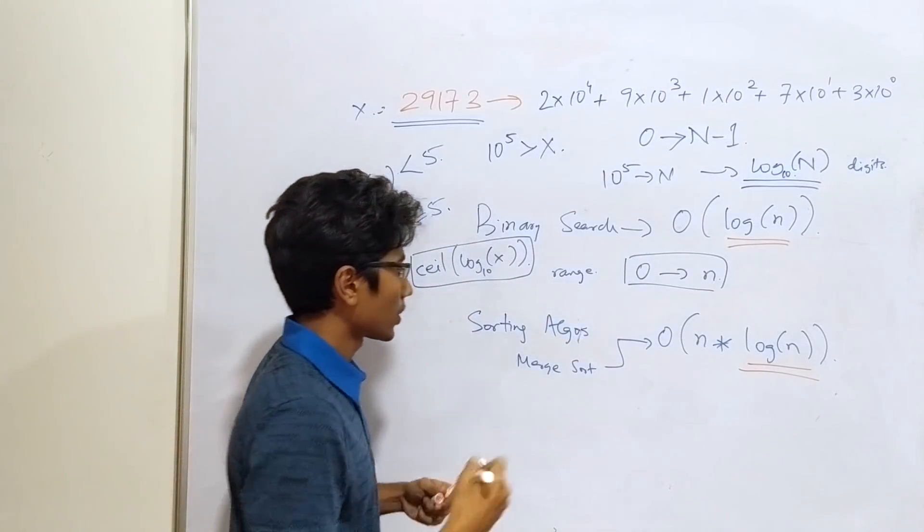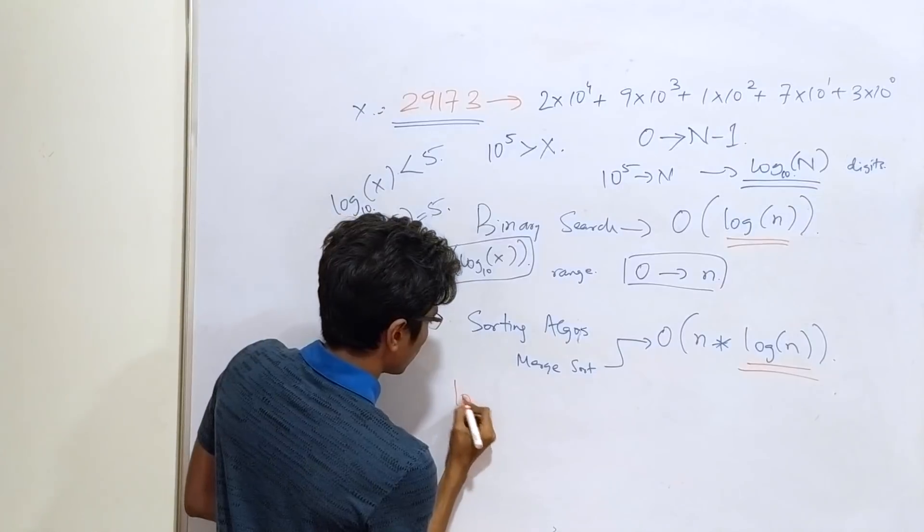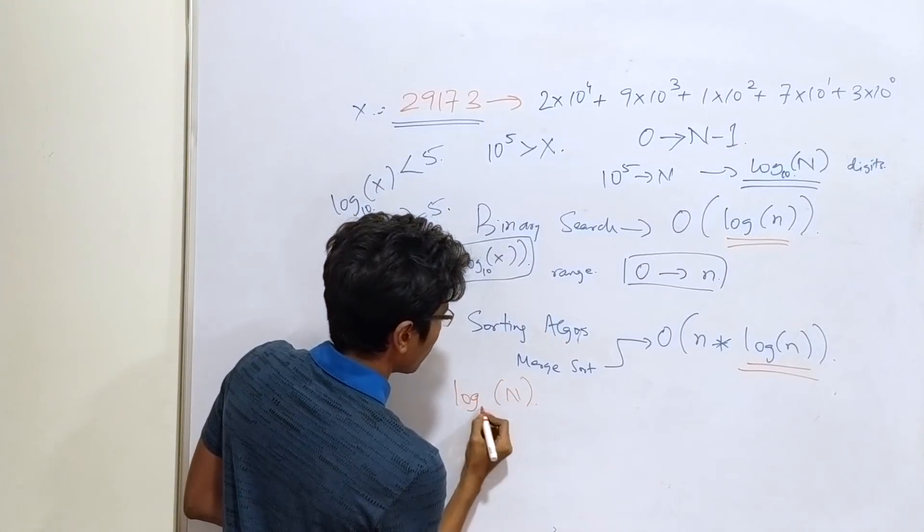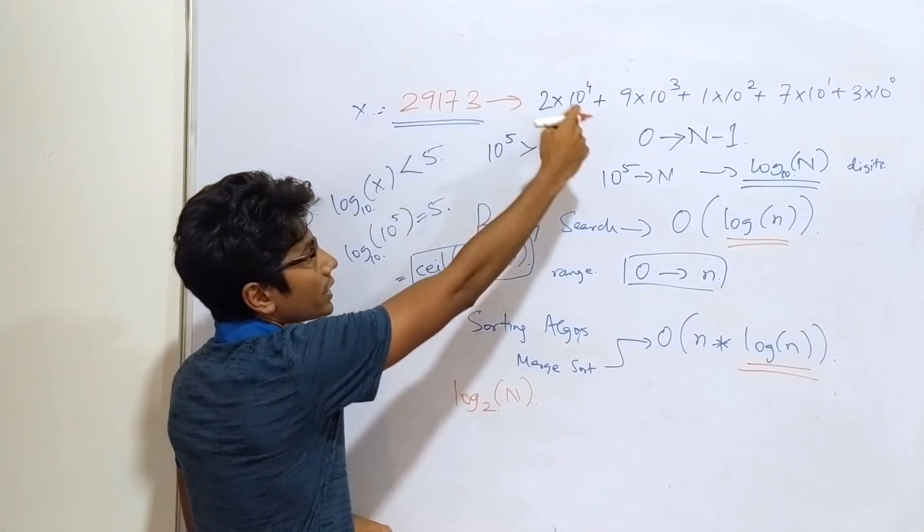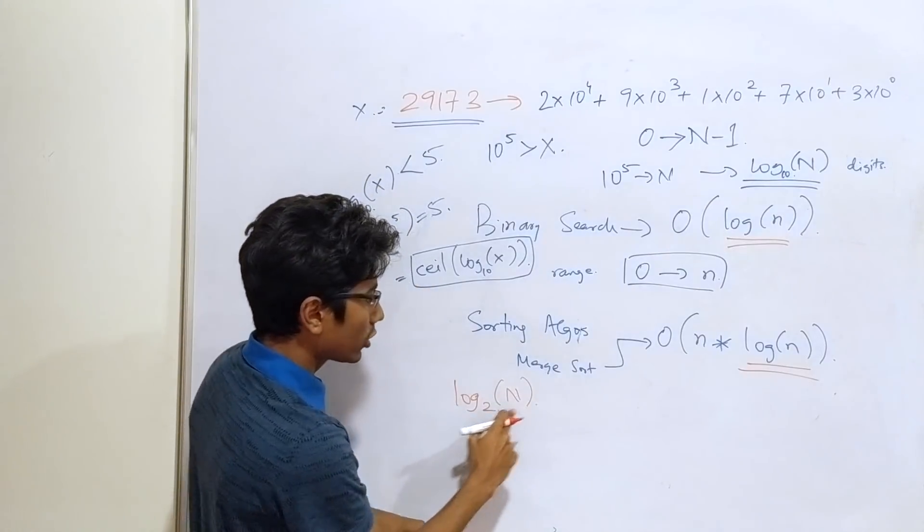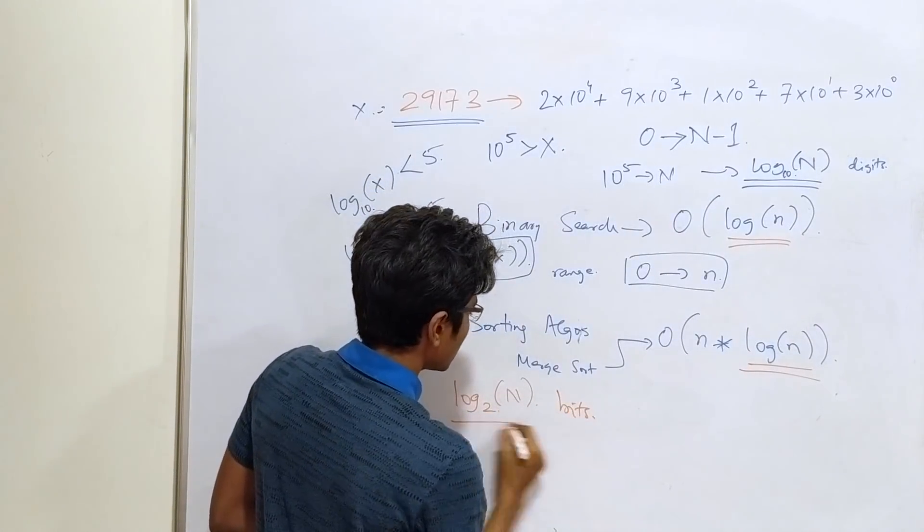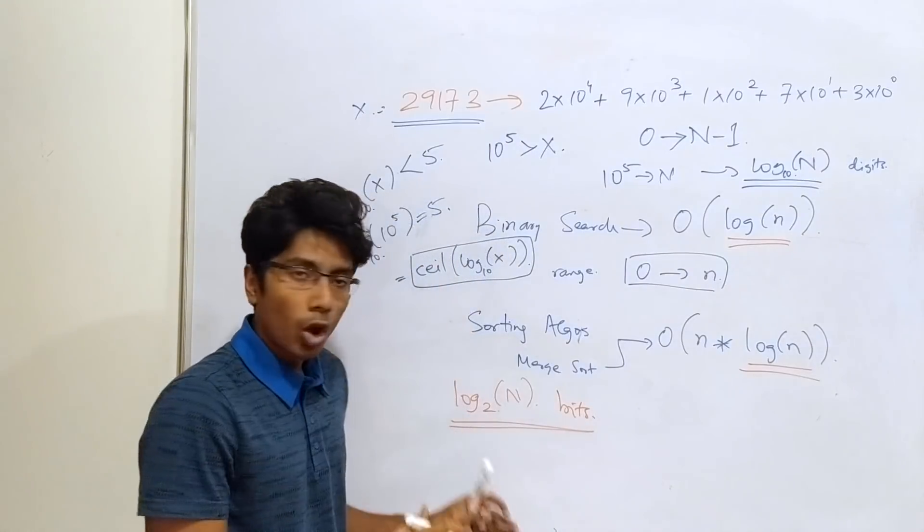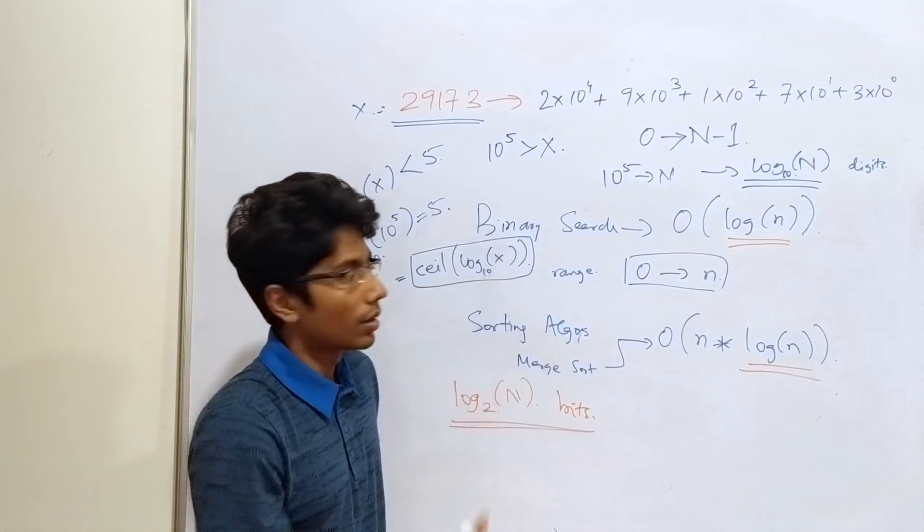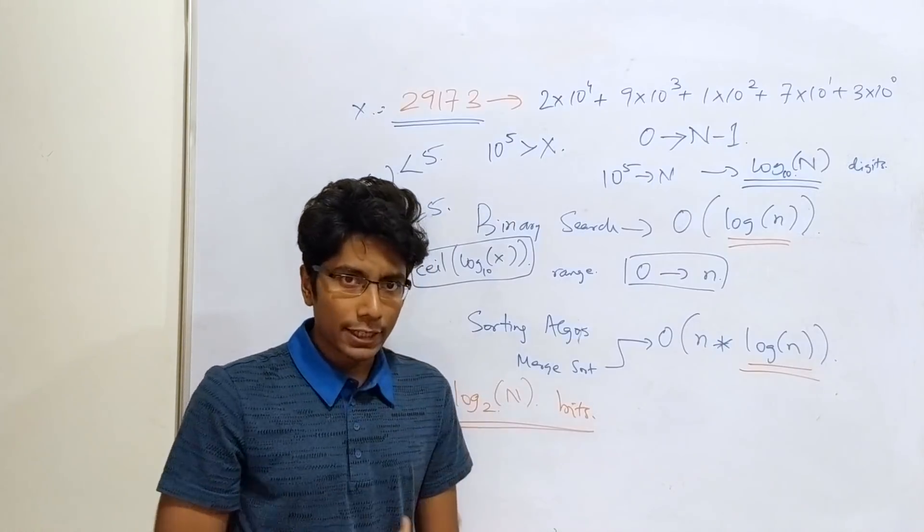Of course, log n to the base 10 is what we talk about when we are talking in human language. But for a computer, everything is binary. So log n to the base 2. This number will be represented in binary in log n to the base 2 bits. So this is the reason why log n appears when log n bits are required to represent a number. But this also tells us something else.